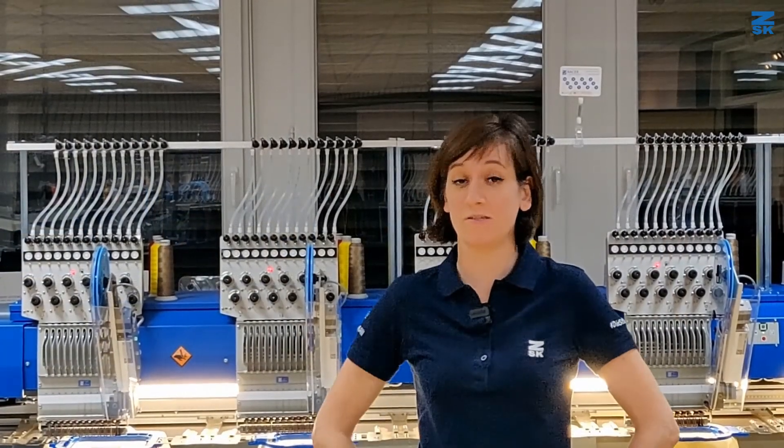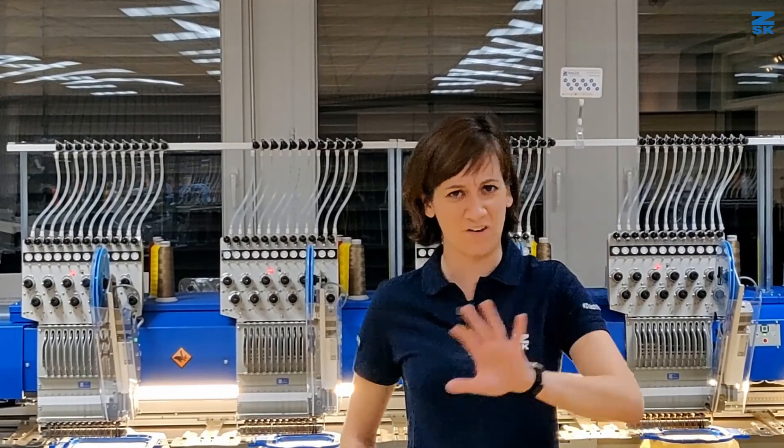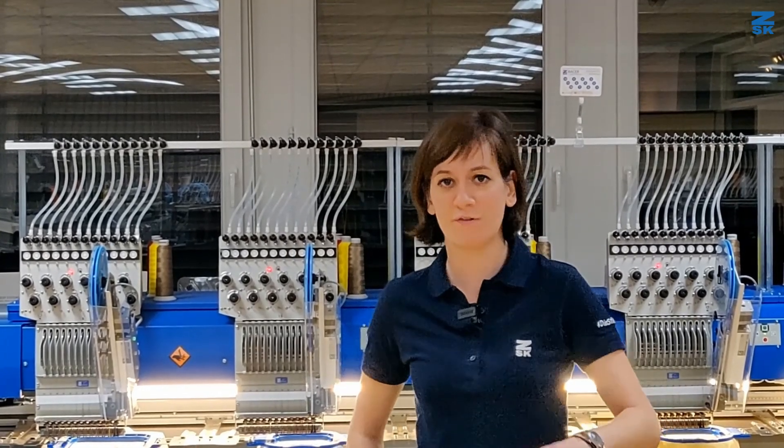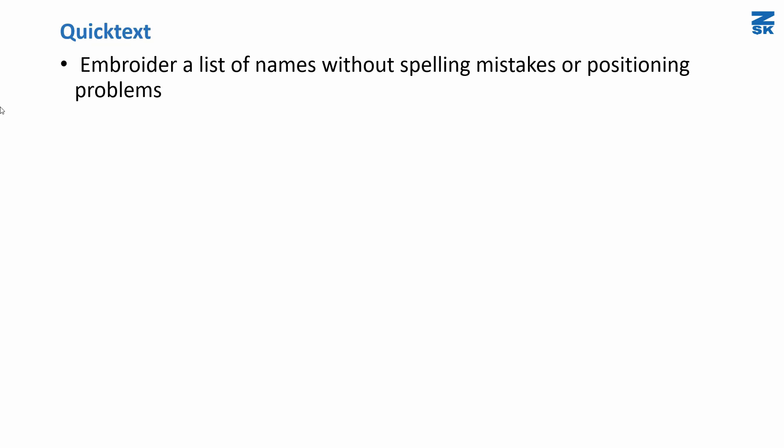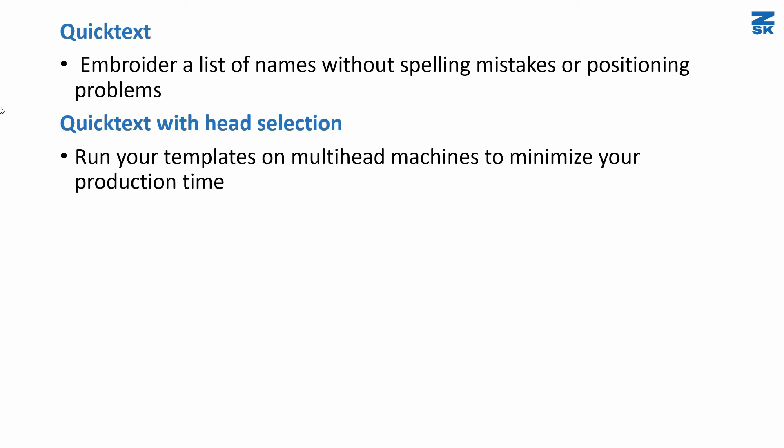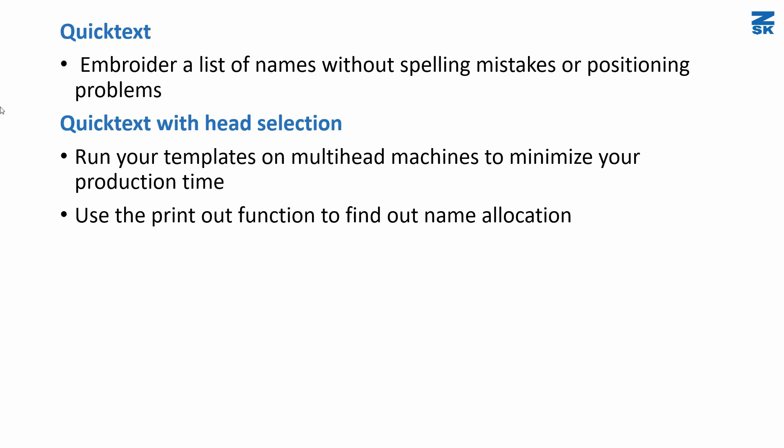So this is our QuickText function. As you see, it's super easy to set up. To summarize what we covered in the past 15 minutes: QuickText itself lets you stitch out a list of names without any spelling mistakes or positioning problems, as names are always automatically placed in the same spot. The new thing is QuickText with head selection, which enables you to run your templates of names on a multi-head machine so that your run and production time is actually minimized. On top of that, you can get a printout to allocate your names, so you know which product to place on what head.